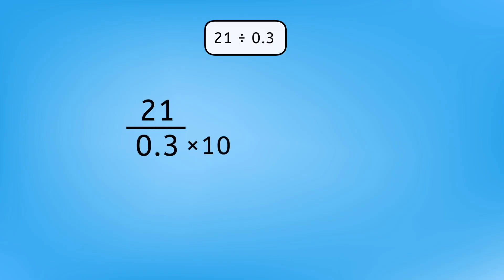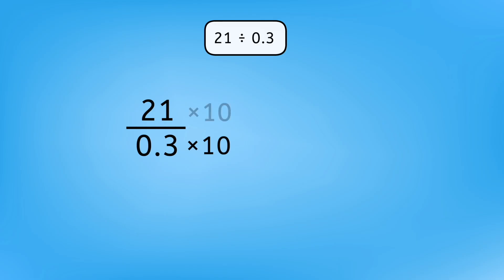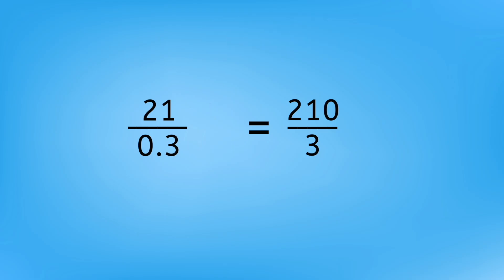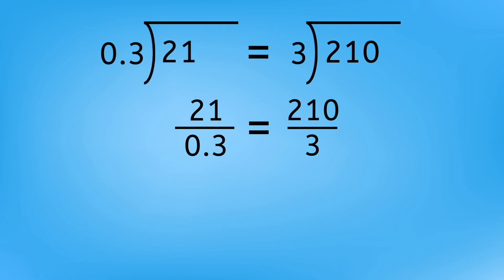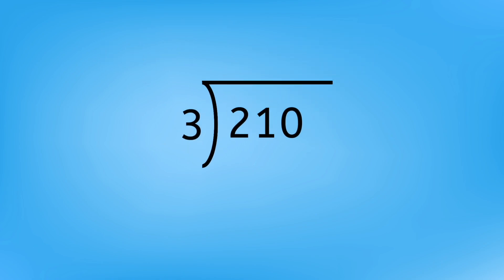Remember how division can also be written in fraction form? If we rewrite this problem as 21 over 3 tenths, and then multiply 3 tenths by 10, this new fraction is no longer equivalent. We would be dividing with a divisor that's 10 times bigger, which would cause our answer to be 10 times smaller than the actual answer. So, in order to make an equivalent fraction, we need to multiply the numerator — which is our dividend — by 10 as well. This new fraction, 210 over 3, is equivalent to 21 over 3 tenths. If these fractions are equivalent, that means these two division problems are equivalent, and their answers will be the same. Now that we've got a whole number divisor and an equivalent equation, we're ready to solve.